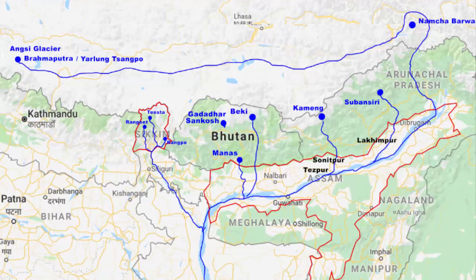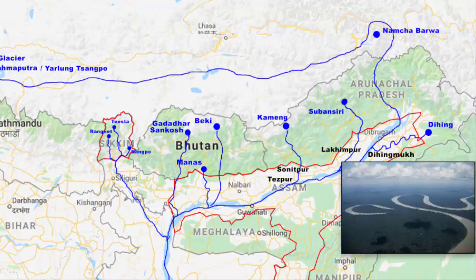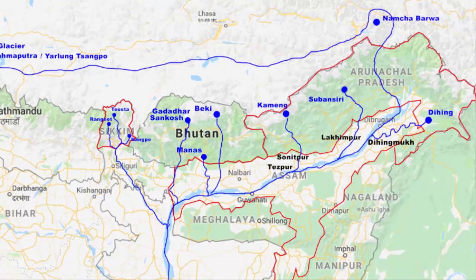The fifth tributary of Brahmaputra in Assam is Gadadhar, also known as Sankos River, originating in northern Bhutan, flowing south along the West Bengal-Assam border, and draining into the Brahmaputra in Assam. The sixth is Dihing, originating in the eastern Himalayas of Arunachal Pradesh, flowing west into Assam and joining the Brahmaputra near Dihing Mukh — this river also creates many oxbow lakes. All six rivers are tributaries of Brahmaputra, originating from the Himalayan mountains and flowing toward the low-lying Assam valley, where they confluence with the Brahmaputra before it flows into Bangladesh and drains into the Bay of Bengal.